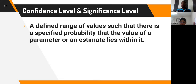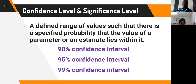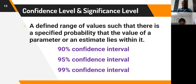When we talk about confidence intervals, we are referring to a defined range of values such that there is a specified probability that the value of a parameter lies within it. The usual confidence intervals we work with are the 90%, 95%, and 99% confidence intervals. You can have a 60% or 98% confidence interval, but researchers usually work within these three. The most common of all is the 95% confidence interval.